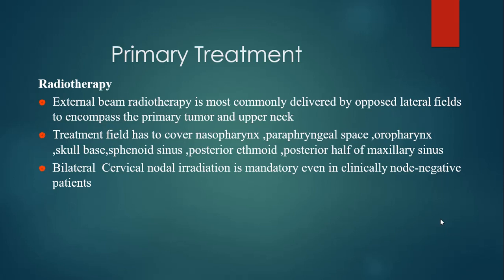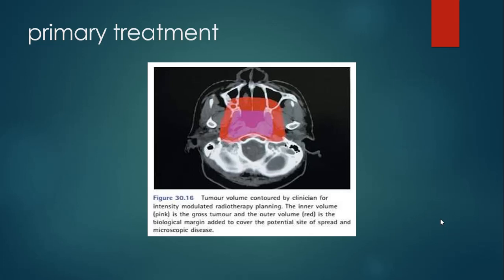External beam radiotherapy is most commonly delivered by opposed lateral fields to encompass the primary tumor and upper neck. The treatment field must cover the nasopharynx, parapharyngeal space, oropharynx, skull base, sphenoid sinus, posterior ethmoid, and posterior half of the maxillary sinus. Bilateral cervical node irradiation is mandatory even if the patient has a node-negative neck. Here you can see the tumor volume contoured for IMRT, where the inner volume is the gross tumor and the outer volume is the biological margin to cover potential spread and microscopic disease.